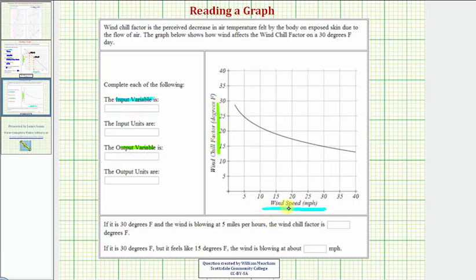So, the input variable is the wind speed. The input units we can see here would be in miles per hour, or MPH.